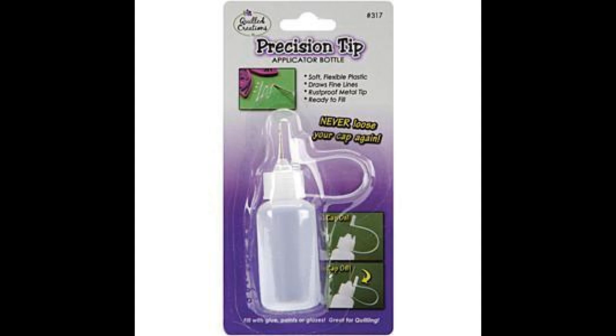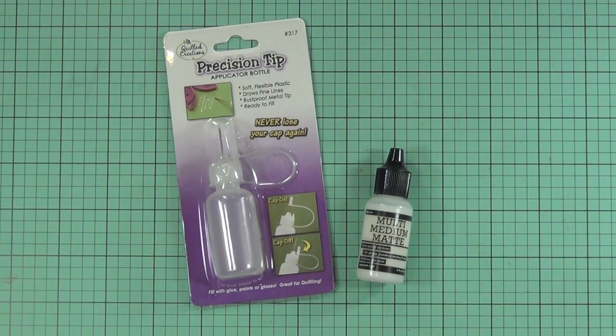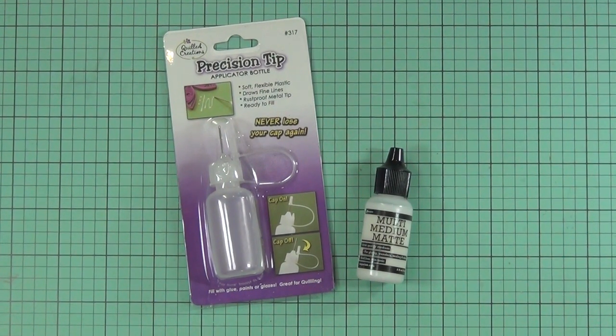Hi, it's Therese from Lost in Paper and I have a quick tip video to share with you today. This is one of my favorite products to use: my liquid glue made by Quilled Creations, called the Precision Tip Glue Applicator Bottle.